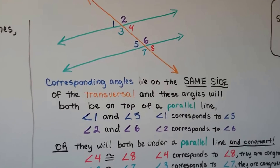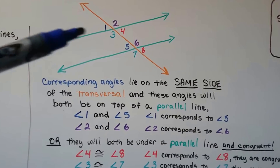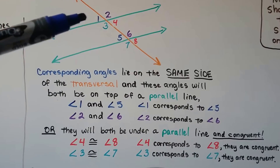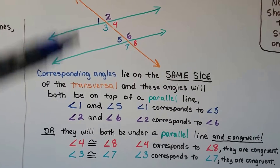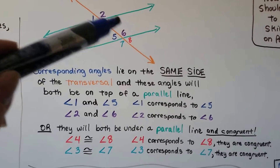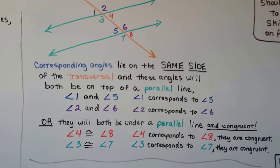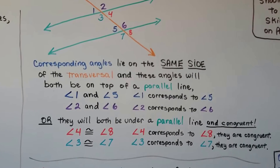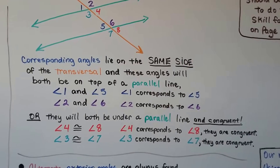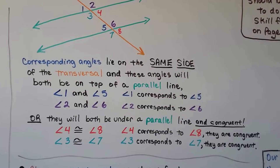Corresponding angles lie on the same side of the transversal — they're both on the left side or both on the right side — and they'll both be on top of or below a parallel line. Angle one is on top of this green line and angle five is on top of this green line, and they're both on the left side of the transversal — those are corresponding angles. Angle two and angle six are on the right side of the transversal; those are corresponding angles too. Three and seven are corresponding, and four and eight are corresponding. They're all congruent: four is congruent to eight, three to seven, one to five, and two to six.